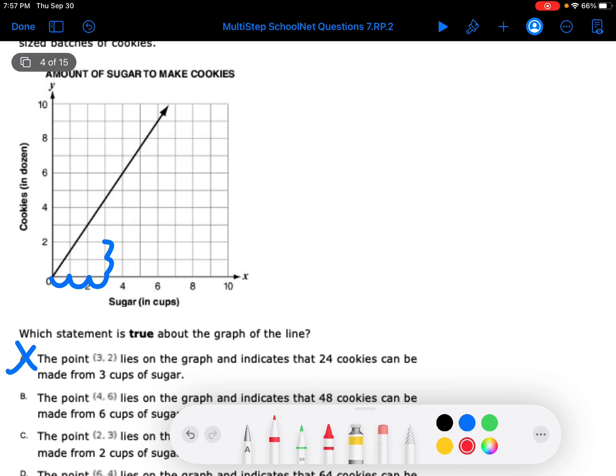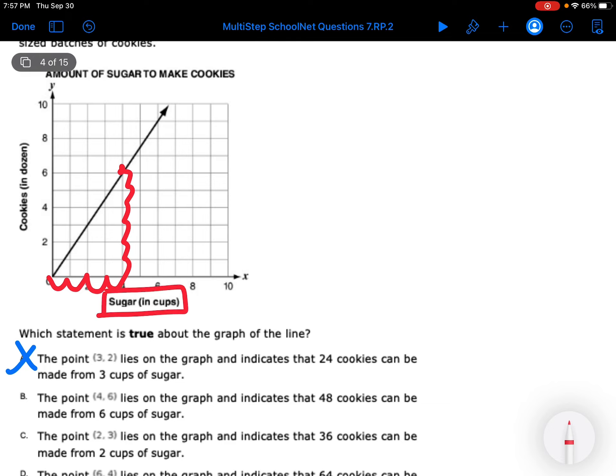The point (4, 6) lies on the line. So 1, 2, 3, 4. 1, 2, 3, 4, 5, 6. So that is on the line. And it indicates 48 cookies can be made from 6 cups of sugar. Well, that's not true because the 4 represents the sugar, not the 6. So B is out.